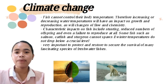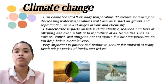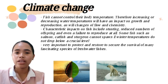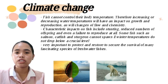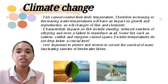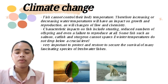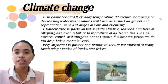Climate change impacts on fish include stunting, reduced number of offspring, and inability to reproduce at all. Some fish, such as salmon and catfish, cannot survive under extreme winter temperatures. It is very important to protect and restore freshwater ecosystems to secure the survival of many fascinating freshwater fish species.